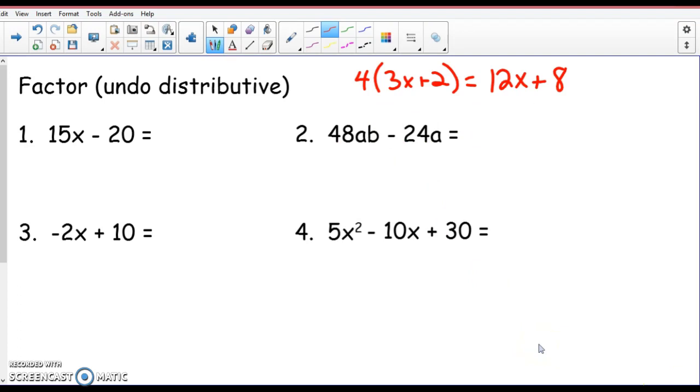I am distributing. So when we are factoring this type of factoring, we are undoing the Distributive Property. Well, if I want to undo multiplication, what am I doing? What's undoing multiplication? Dividing. So to undo the Distributive Property, you're thinking to yourself, what is the greatest common factor of 15x and negative 20?